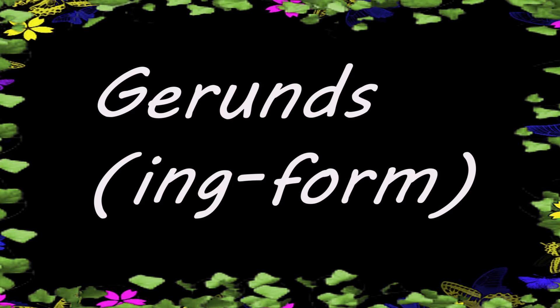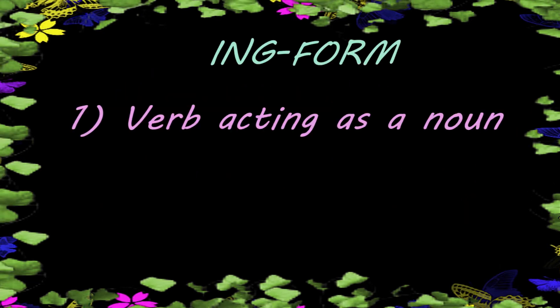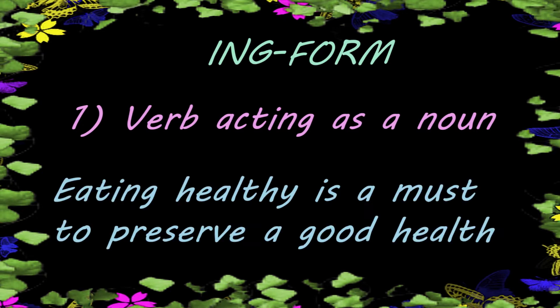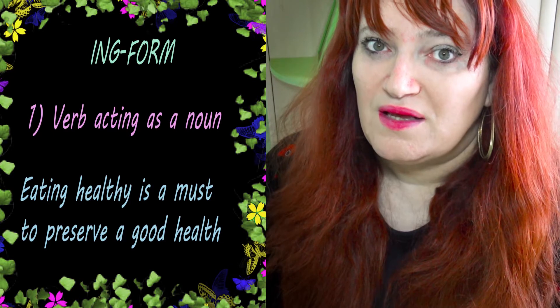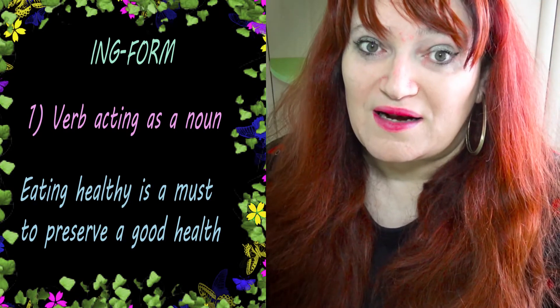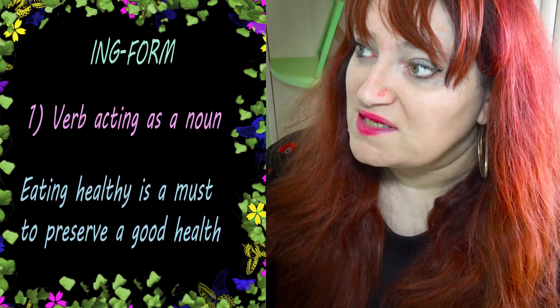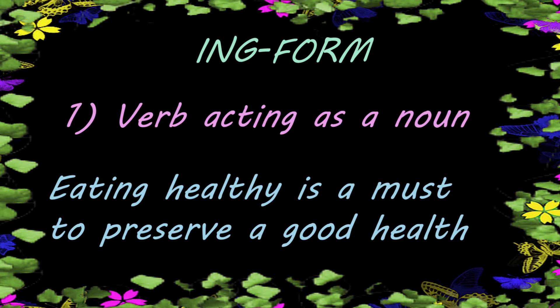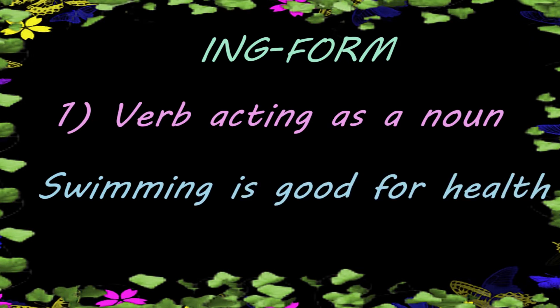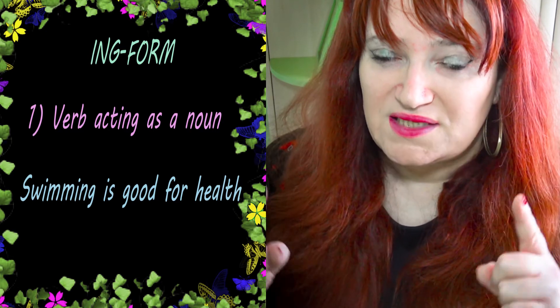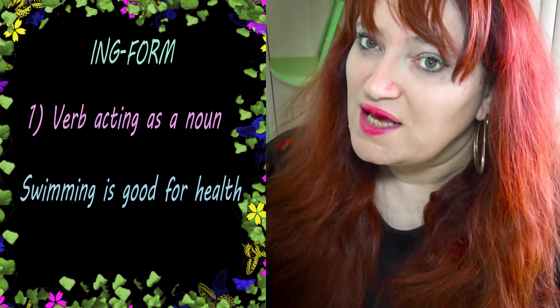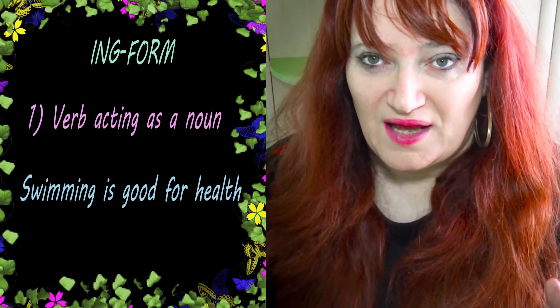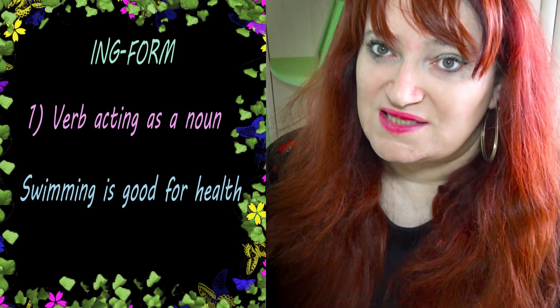Now let's focus on the ING form. Which verbs use the ING form? First, when the verb acts as a noun. For example: 'Eating healthy is a must to preserve good health.' Or 'Swimming is good for health.' Here 'swimming' acts as a noun — it means 'el nadar' or 'la natación.'